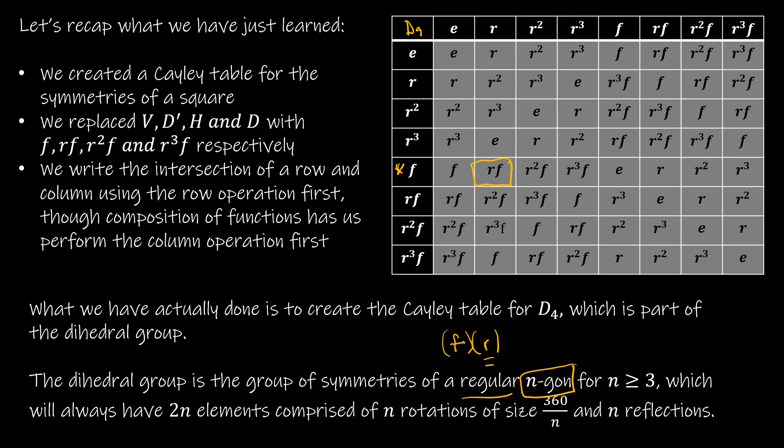Some things that we should know: you're always going to have two N elements. So you're going to end up with, in this case we had D4. Notice we had four rotations and four reflections, and that's always going to be the case. So if you're dealing with D3, you're going to have three rotations, three reflections. D7, seven rotations, seven reflections. You get the idea.